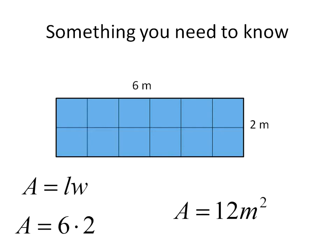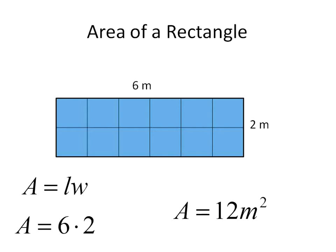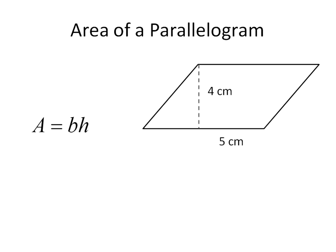Now let's look at some other quadrilaterals and talk about how this actually relates. First off, the area of a parallelogram. A parallelogram's area can be calculated using this equation: the area is equal to the base times the height. The base is the length along the bottom, and the height is the perpendicular dotted line next to the number 4. So we can fill in the information: the base is 5, the height is 4. 5 times 4 is 20 square centimeters, and that will be the area of this parallelogram.